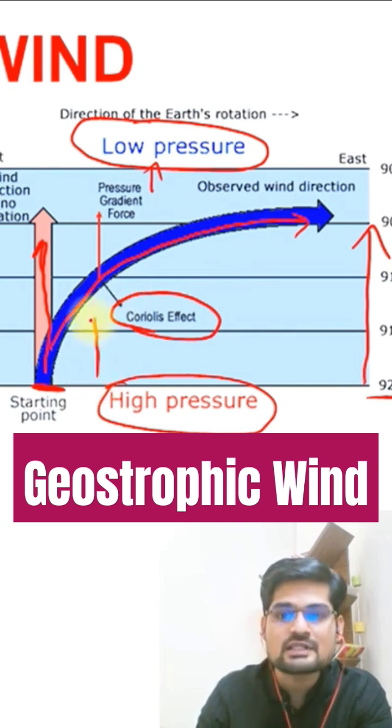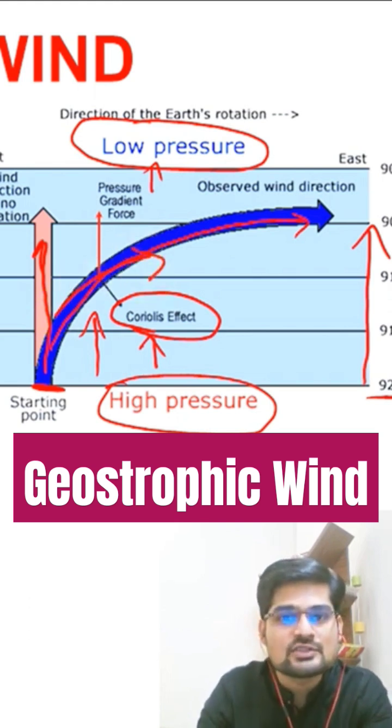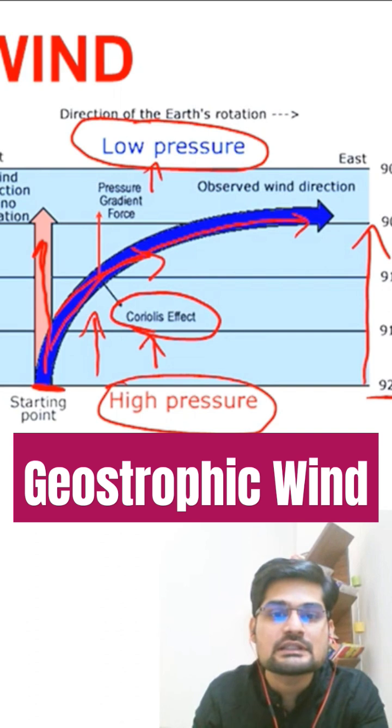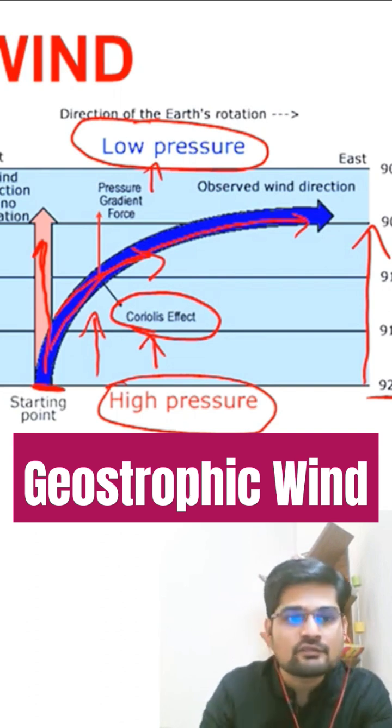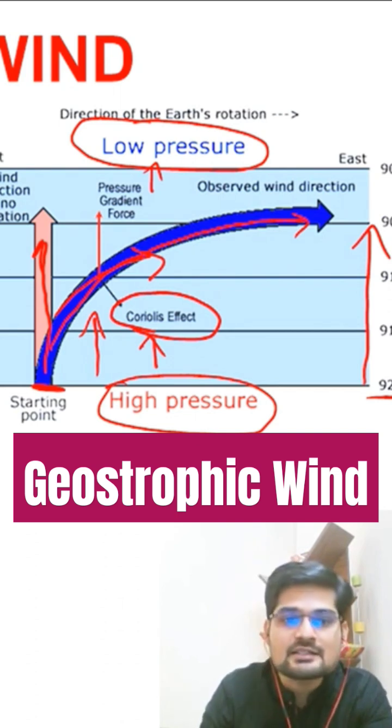So across the pressure gradient, when this Coriolis force also has an impact, there is this turn in the wind. So this is what we say is geostrophic wind which keeps on turning. Here the velocity and the direction of the wind are important and they are the net result of the wind generating forces.